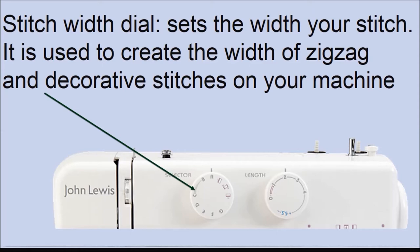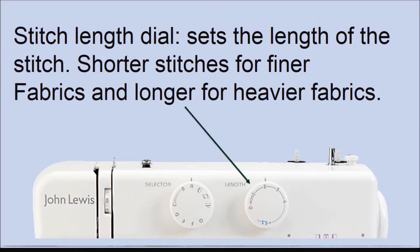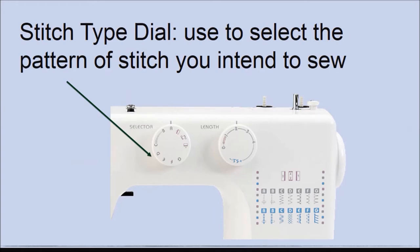Stitch width dial — this is used to set the width of your stitch. Stitch length dial — this sets the length of the stitch. When you are sewing fine fabrics like silk, shorter stitches are used, so you need a short stitch length. But while sewing heavier fabrics like denim, longer stitches are used. Stitch type dial — used to select the pattern of stitch you intend to sew. Each machine comes with different patterns, so now is a good time to check the different stitch patterns on your sewing machine.